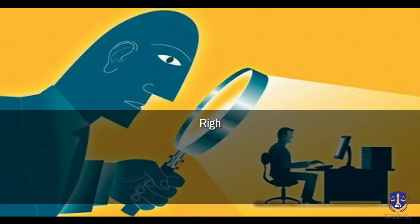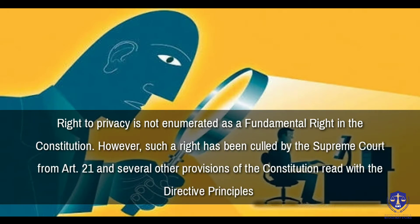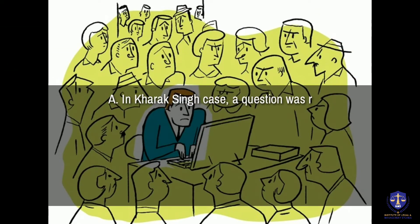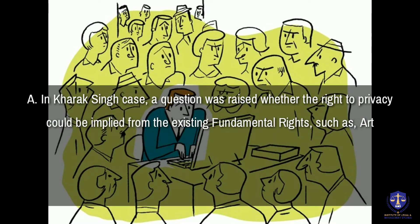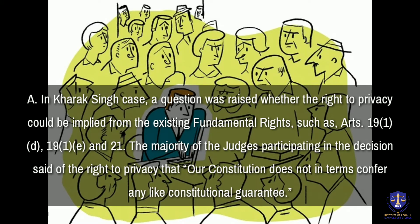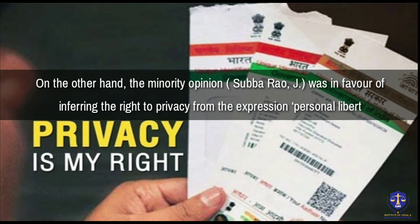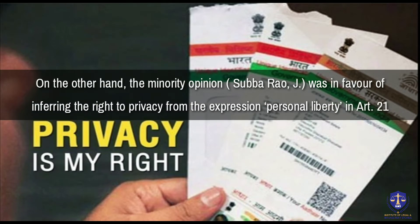Right to Privacy. The right to privacy is not enumerated as a fundamental right in the Constitution. However, such a right has been culled by the Supreme Court from Article 21 and several other provisions of the Constitution, read with the directive principles of state policy. In the Karak Singh case, a question was raised whether the right to privacy could be implied from existing fundamental rights such as Article 19(1)(d), (e), and Article 21. The majority said the Constitution does not confer any such constitutional guarantee, while the minority opinion by Justice Subharao was in favour of inferring the right to privacy from the expression 'personal liberty' in Article 21.